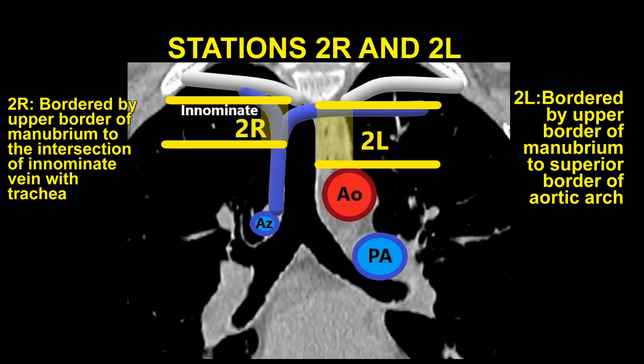Station 2R, the upper right paratracheal node, is bordered by the upper border of the manubrium to the intersection of the innominate vein with the trachea. The EBUS scope should be placed in the upper trachea at the level of the 4th and 5th tracheal rings with the probe oriented towards the right lateral wall at the 3 o'clock position.